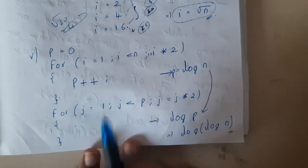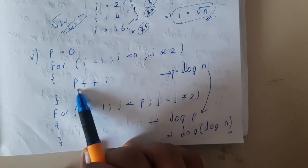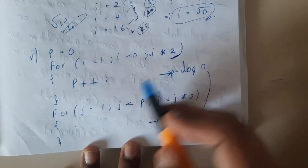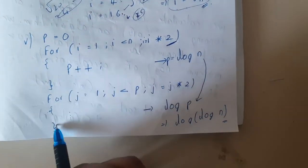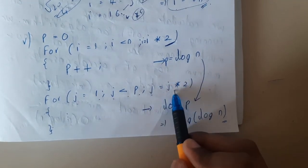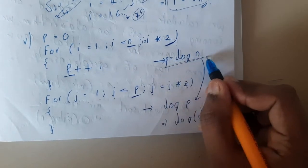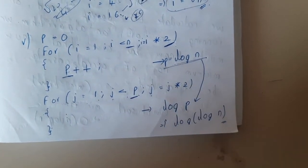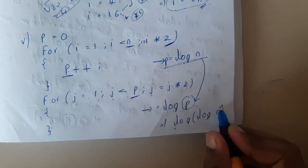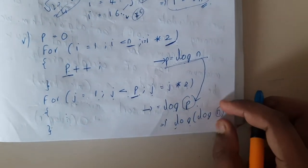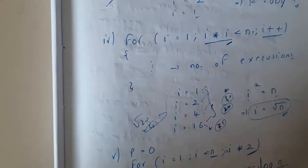Now an interesting question: p = 0; for(i = 1; i < n; i = i * 2) p++. As established, this runs log n times, so after this loop p = log n. Then a second loop: for(j = 1; j < p; j = j * 2). This runs log p times. Since p = log n, the second loop runs log(log n) times. So the time complexity of this combined algorithm is log(log n).